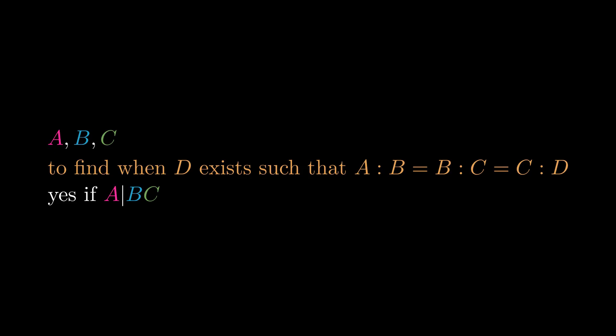So if A measures B and C, then D can be found. We just don't have the proof for that from Euclid. You can figure it out yourself if you want.